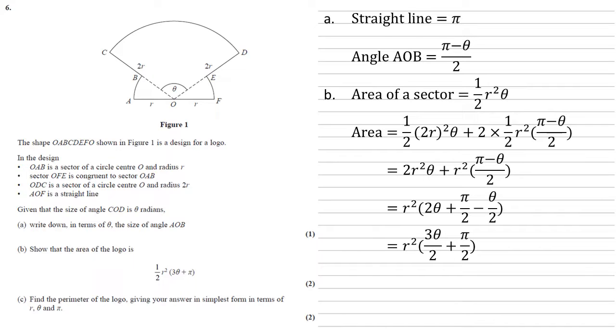Simplifying inside the brackets, the 2θ minus the θ over two gives us 3θ over two. And then we can bring the half out to get half R squared times 3θ plus π as required.